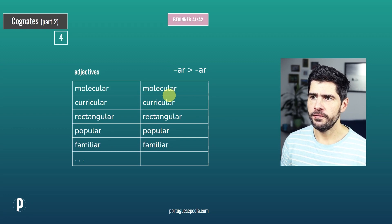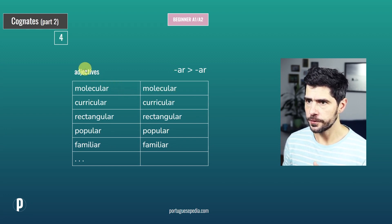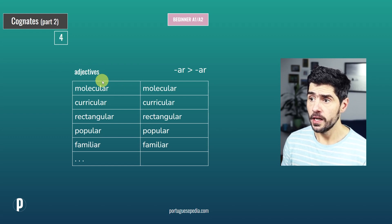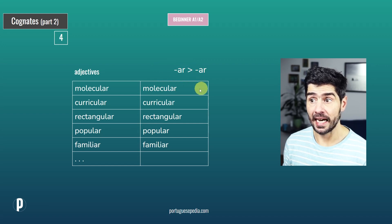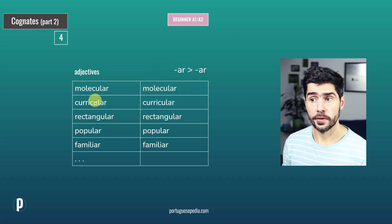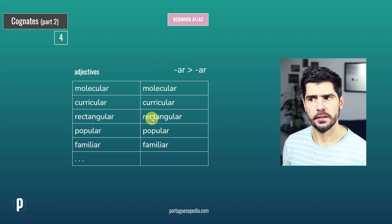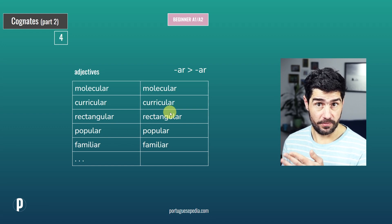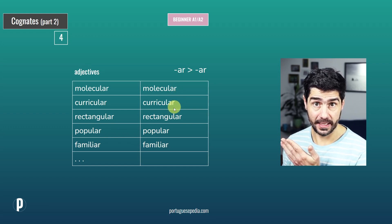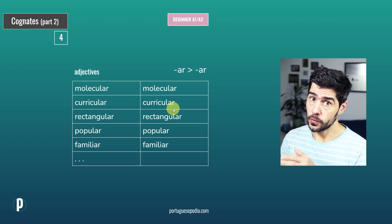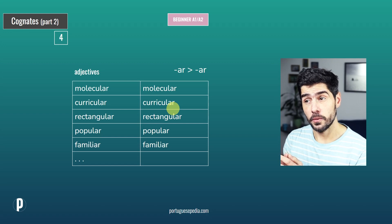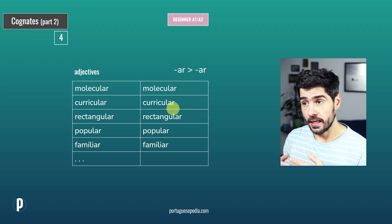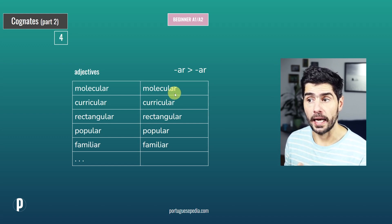Moving on to group number four — still adjectives. Here we have the ending -AR on both sides. So molecular — molecular. Rectangular — retangular (we don't pronounce the C). Popular — popular. Words with R at the end get the last syllable stressed. So: molecular, curricular.